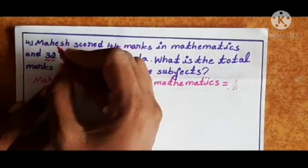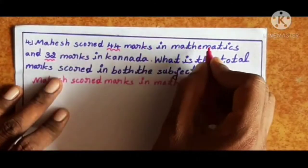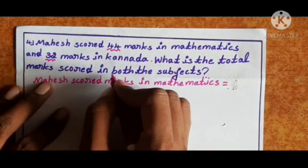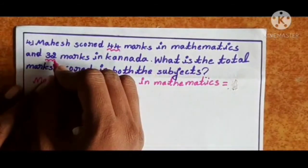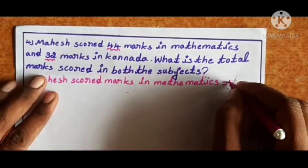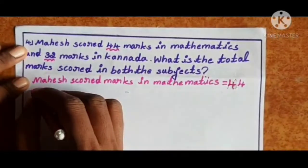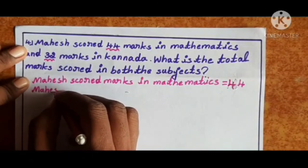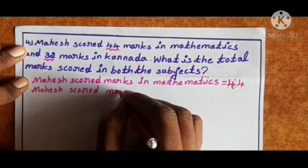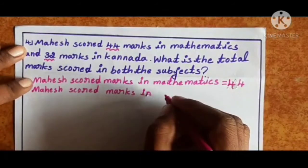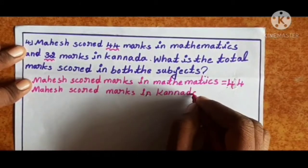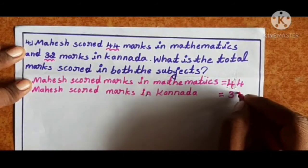Next, fourth one: Mahesh scored 44 marks in mathematics and 32 marks in Kannada. What is the total marks scored in both subjects? So 44 plus 32. First, form the sentence: Mahesh's score in mathematics is 44. Next, write Mahesh's score in Kannada — total marks in Kannada is 32.